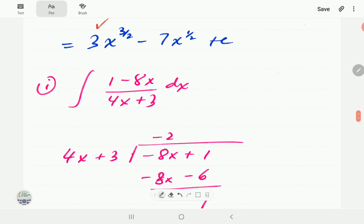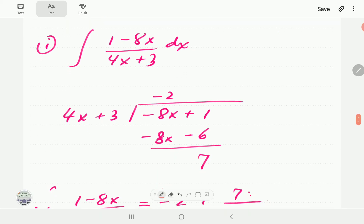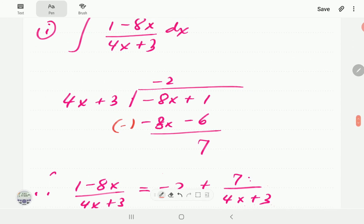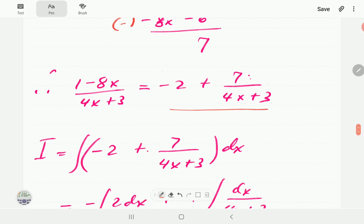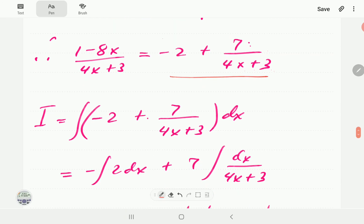This one is an improper rational expression with the linear denominator so we're going to divide first. So we write the negative 8x first then plus one. Then 4x goes here negative 2 times and negative 2 times this is negative 8x, negative 2 times this is negative 6. Then we subtract, these terms cancel out, these add up to seven.